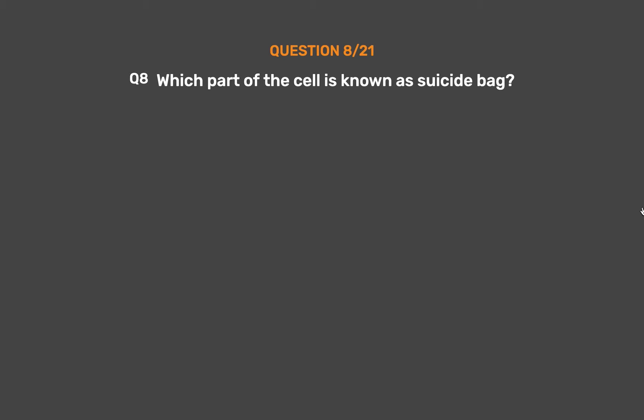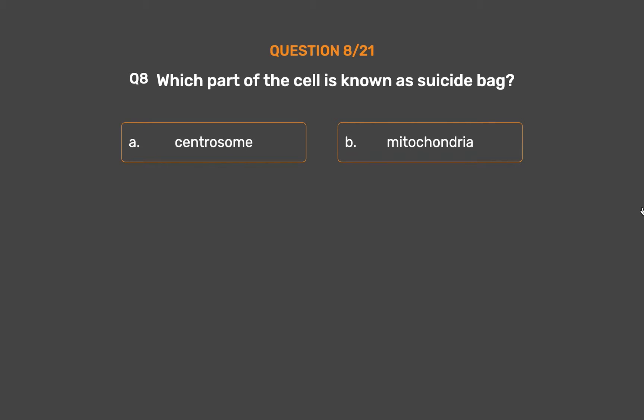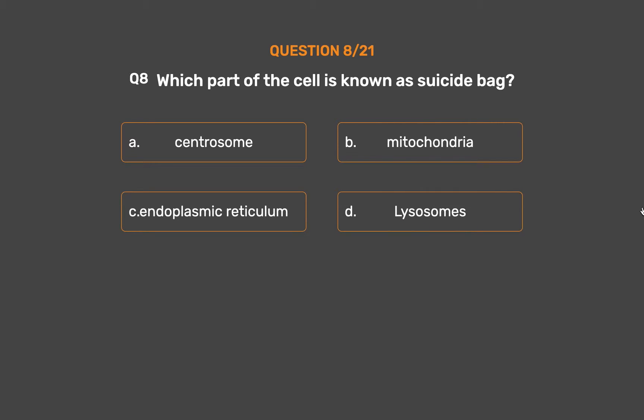Question No. 8: Which part of the cell is known as the suicide bag? Option A: Centrosome. Option B: Mitochondria. Option C: Endoplasmic reticulum. Option D: Lysosomes.